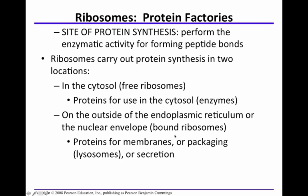There are two locations where ribosomes carry out protein synthesis: in the cytosol, or on the outside of the ER or the nuclear envelope. The proteins that are made on the rough ER or the nuclear envelope are destined to become part of a membrane or destined for secretion. I could hear a test question here, building upon what we've learned in the previous chapters about structure, function, and composition of membranes.